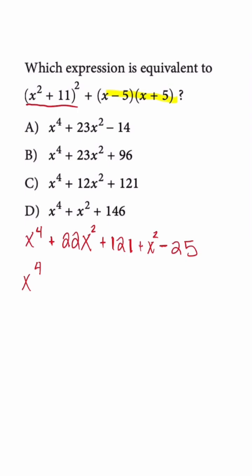So now we have x to the fourth plus 23x squared. And then when we take 121 and we subtract 25 from it, this is going to give us a positive 96.